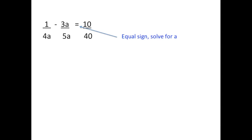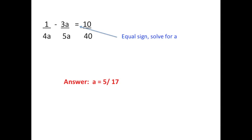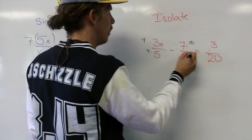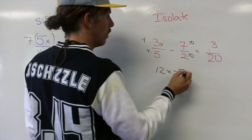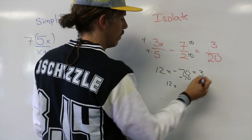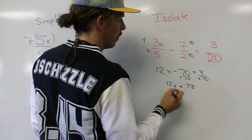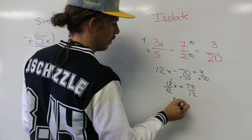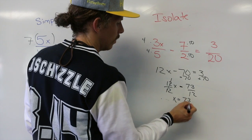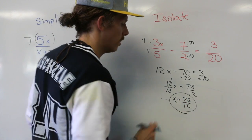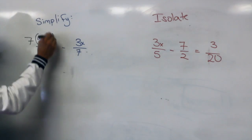Here we isolate, here we isolate — there's an equal sign, so we isolate. Here we solve for x, here we solve for x — there's an equal sign, so we isolate.